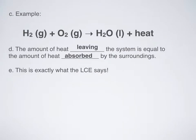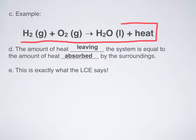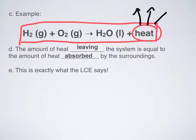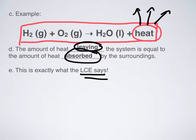What's an example of an exothermic reaction? You can write this down. Just like in unit 12, if heat is a product, it is an exothermic reaction, because heat as a product means it is leaving the system — going away into the surroundings. The amount of heat leaving the system is equal to the amount of heat being absorbed. That is exactly what the law of conservation of energy says.